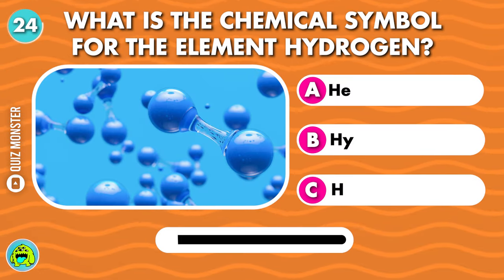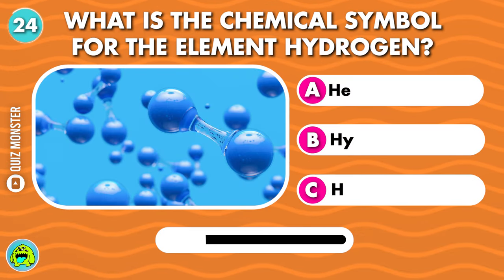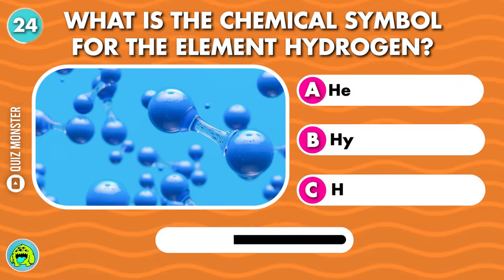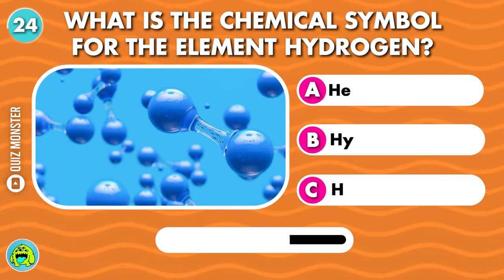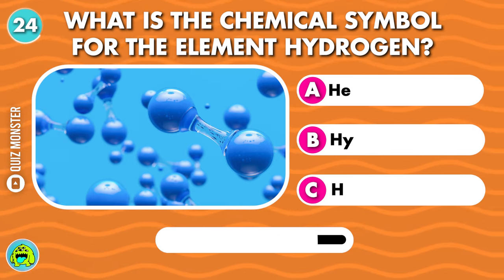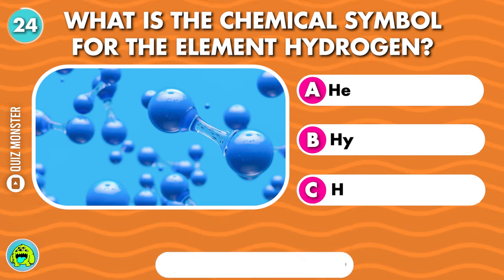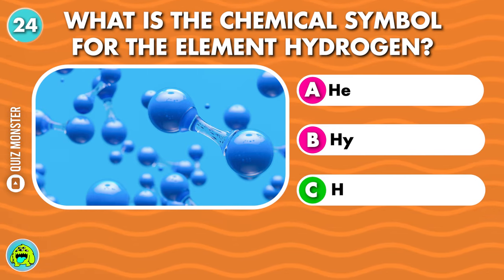What is the chemical symbol for the element hydrogen? H.